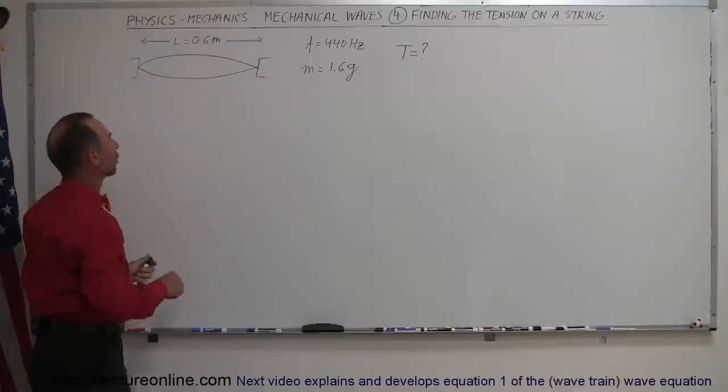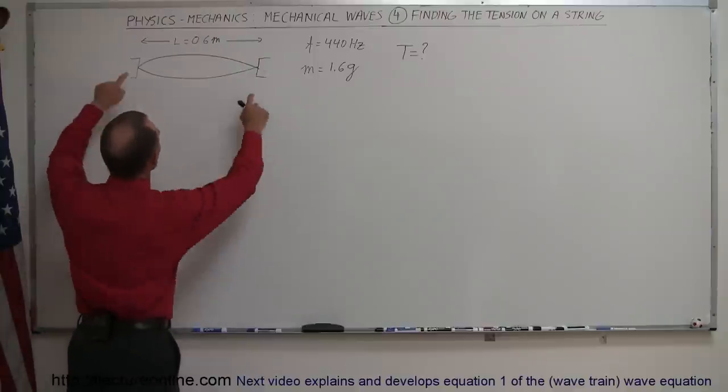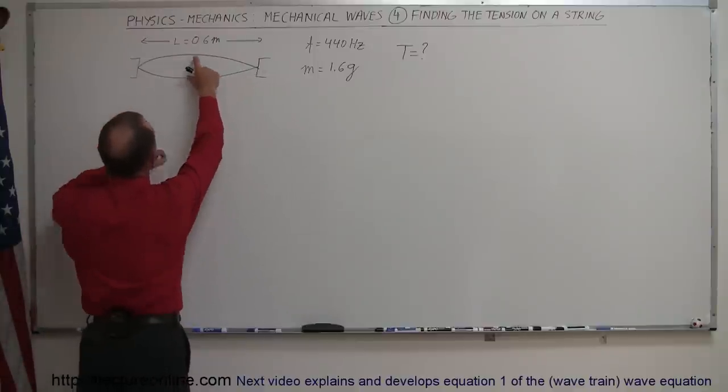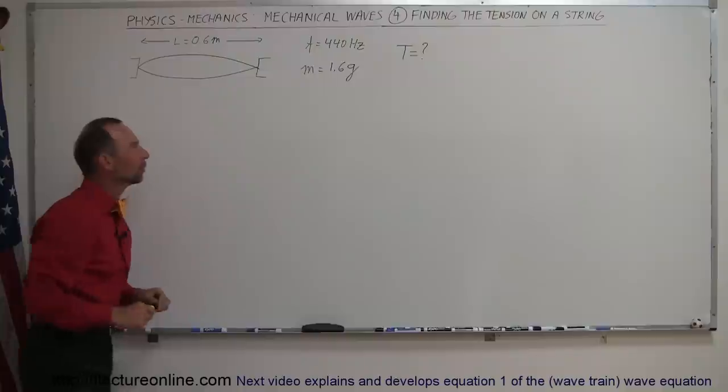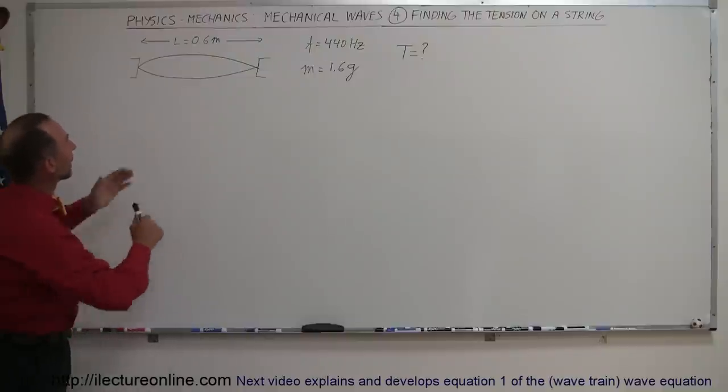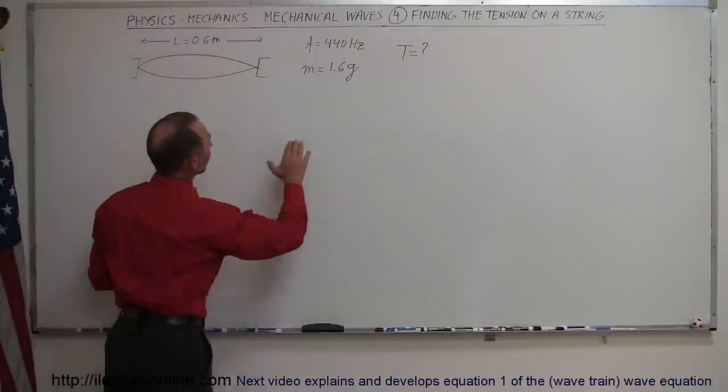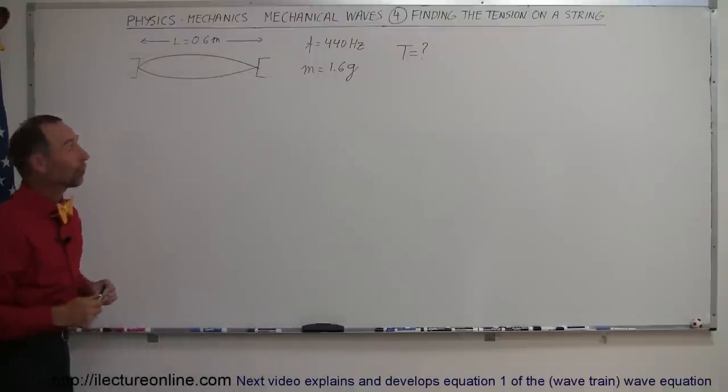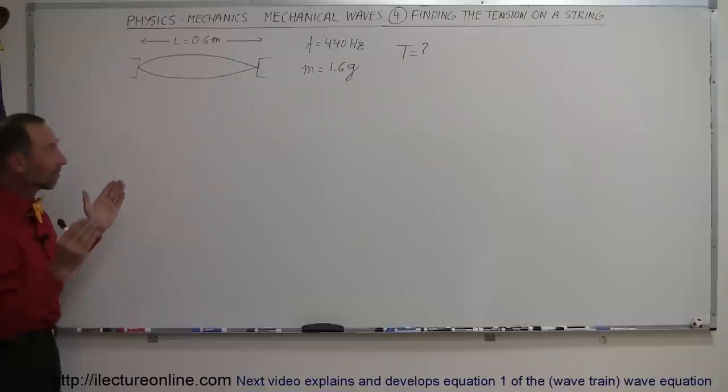Those are called the nodes and this is called the antinode. The length of the string is said to be 0.6 meters. The frequency of the oscillations is 440 Hertz and the mass of that piece of string is 1.6 grams.